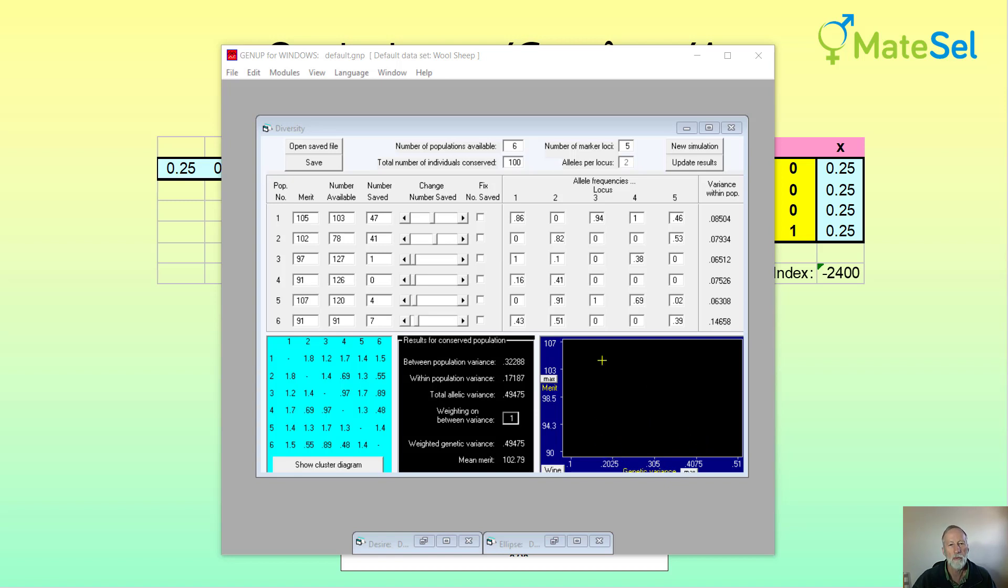And the genetic variance is measured by total allelic diversity across a number of different markers. That's not critically important I just want to show you how this one operates.